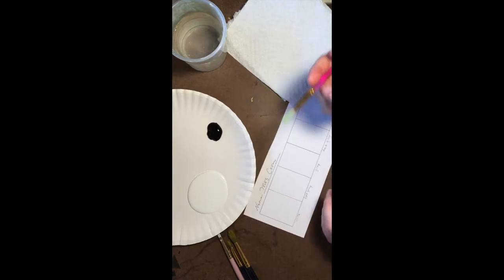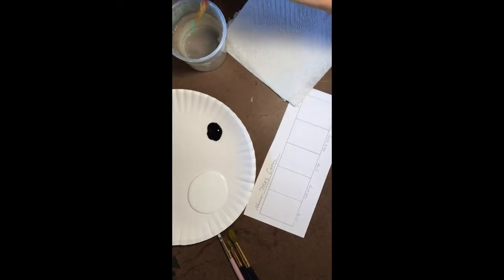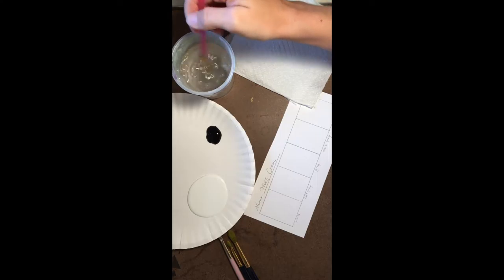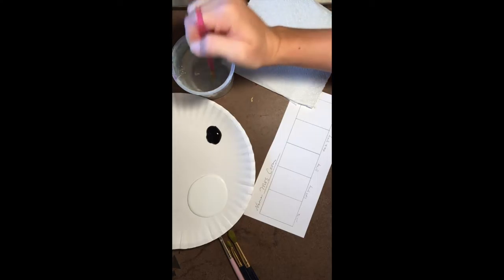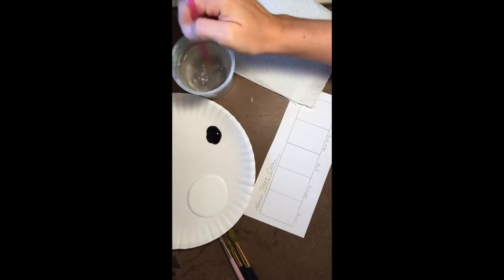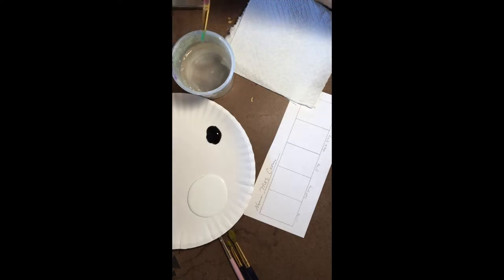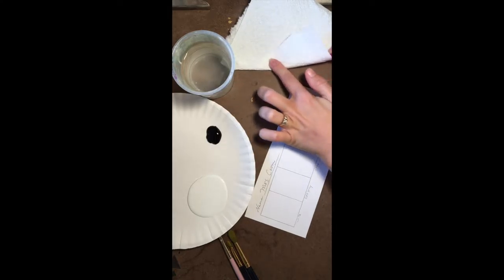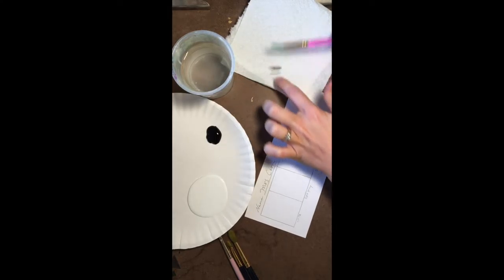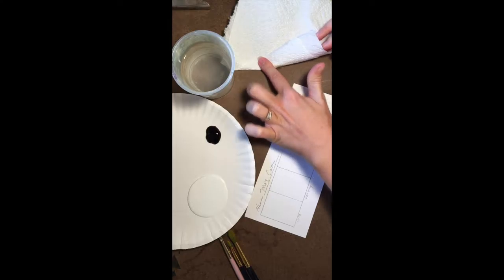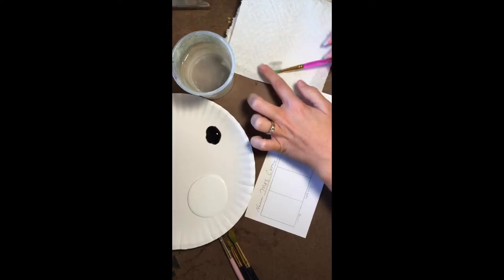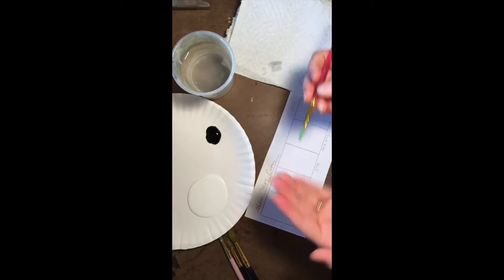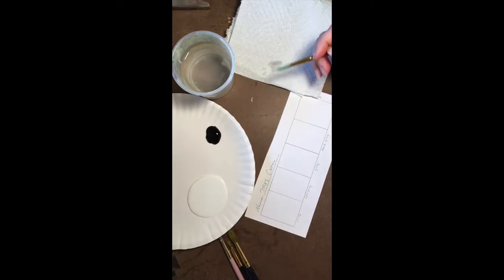First thing we want to do is make sure your brush is clean, swirling it in the water back and forth. Don't scrub it into the container, just kind of swirl. Wipe it on the edge of your water cup, and then you're going to use a paper towel to squeeze the water out. Don't scrub it on the paper towel, just gently squeeze it out. With tempera paint you don't want a lot of water in your brush because it's going to dilute the paint and make it not look so good.